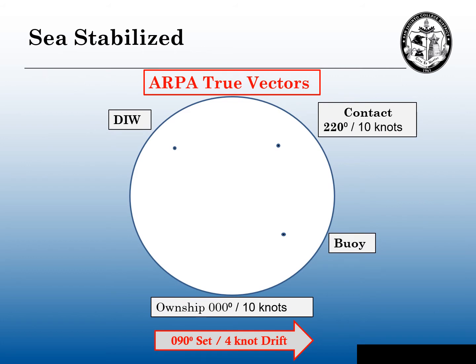Here's the same diagram with sea-stabilized ARPA true vectors. My own ship is going 000 degrees at 10 knots, and we have a four-knot drift heading to the east. On a sea-stabilized radar, the vector is going to go due north at 10 knots — everything's moving with the sea. The contact to the east at 220 degrees at 10 knots will also have a 10-knot vector heading 220 degrees. The vessel dead in the water will not have a true vector — it has a relative vector but is just floating with the water.